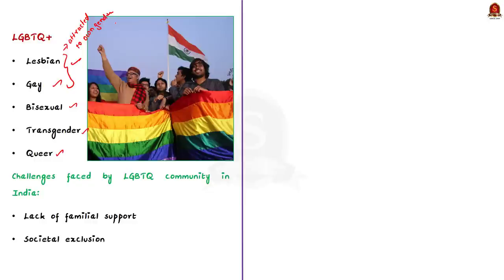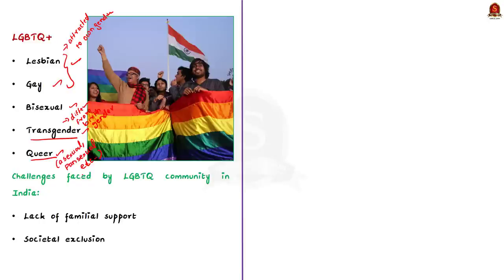Transgender refers to people who have a gender identity different from their gender identity at birth. Finally, the term Queer is of recent origin and refers to those who do not identify themselves with the mainstream heterosexual norm. Simply put, it is an umbrella term which can include every sexual orientation other than heterosexual. We have now seen all the terms associated with LGBTQ+.